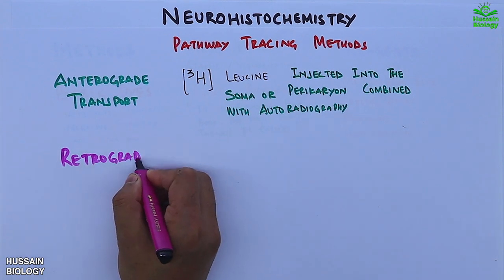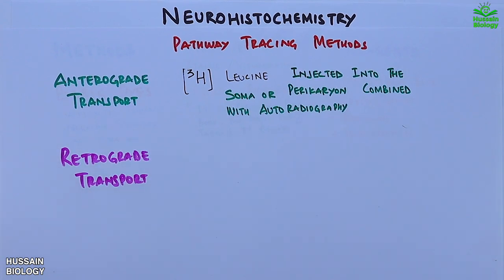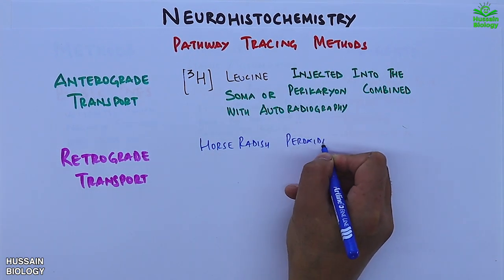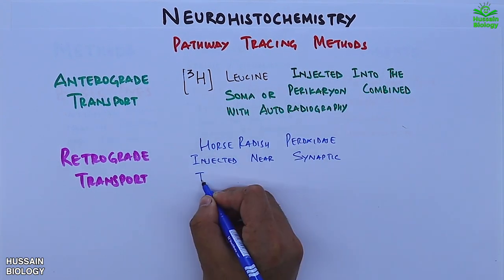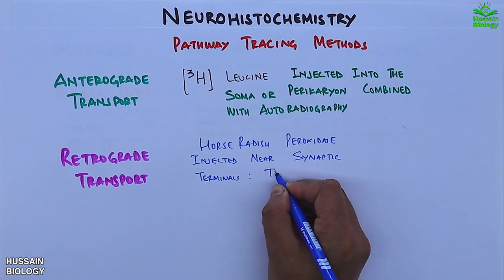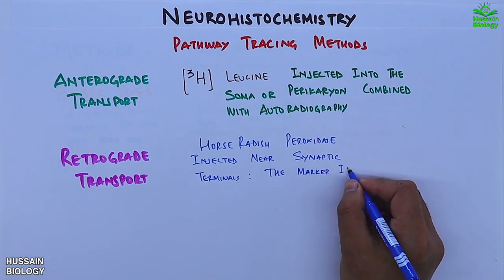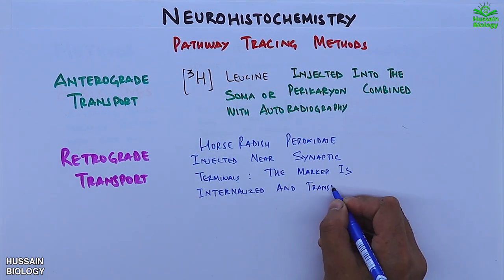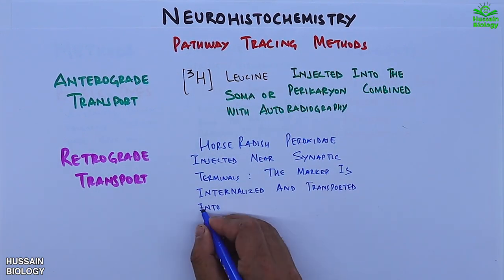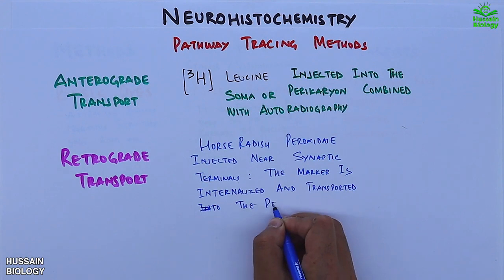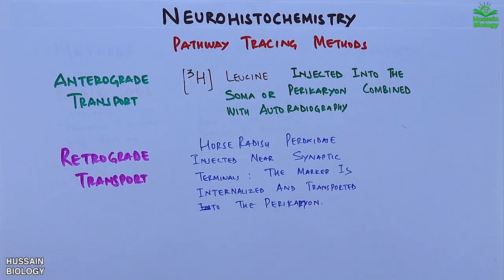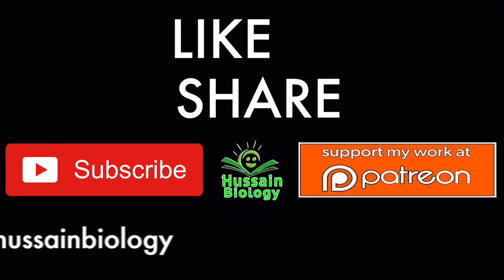Then we have retrograde transport, in which horseradish peroxidase is injected near synaptic terminals. The marker is internalized and transported to the perikaryon, which can then be visualized easily. These are some of the methods and techniques used in neurohistochemistry to visualize neuronal structures.